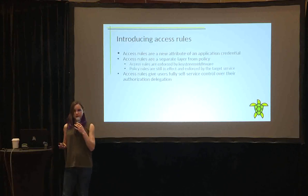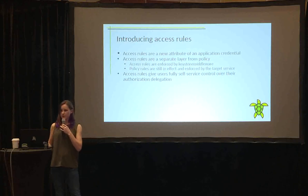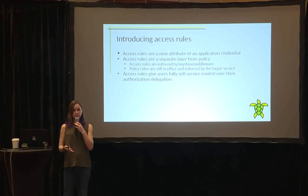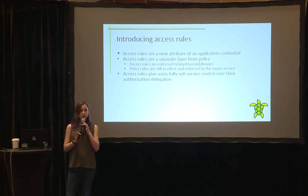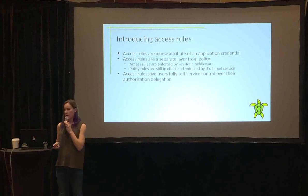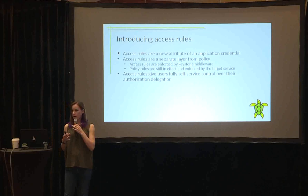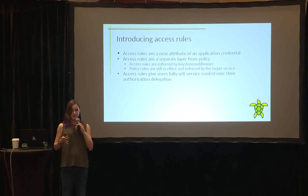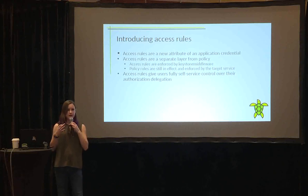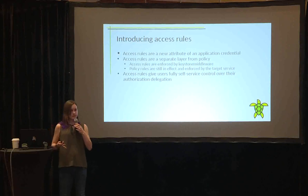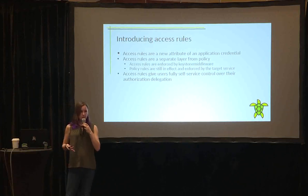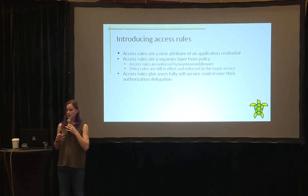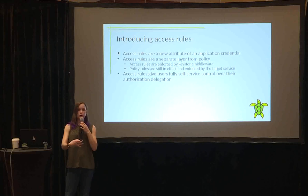This is why we introduced access rules to application credentials — to help with this problem by creating a new attribute of application credentials. These only apply to application credentials; they don't apply to trusts or regular user permissions, which still use regular policy rules. Access rules are a completely separate layer from policy, so all policy rules still apply and are enforced by the service, while access rules are enforced by Keystone Middleware. Since users are creating these application credentials themselves, they have full control over these access rules and don't need to know anything about policy rules. They are still not able to create an application credential that does more than what their own role assignments allow.